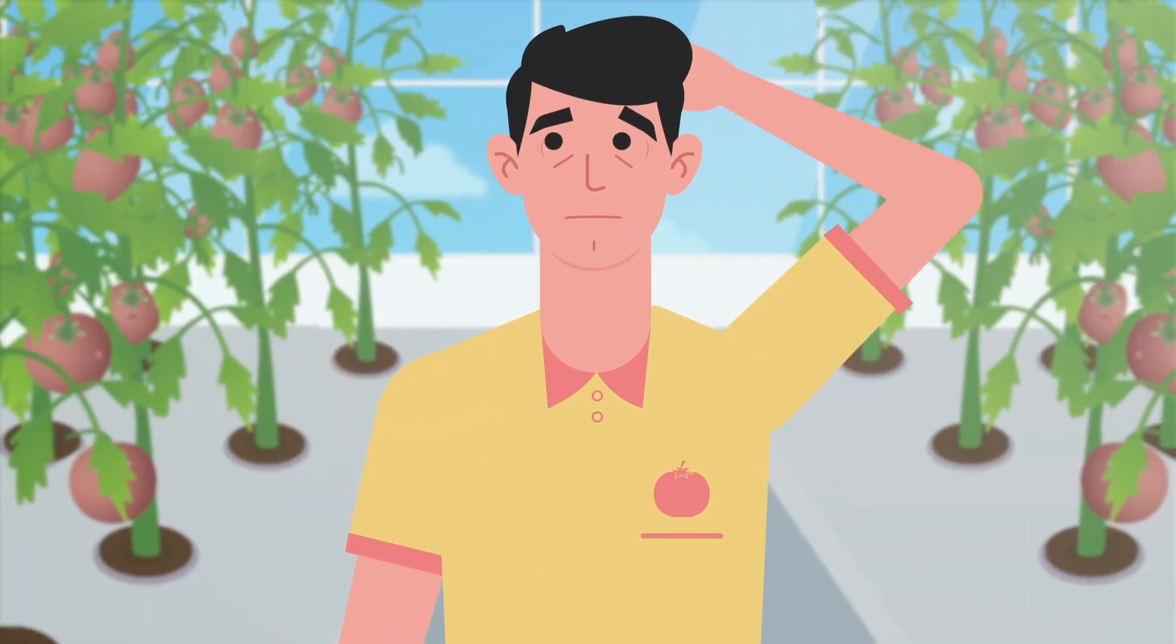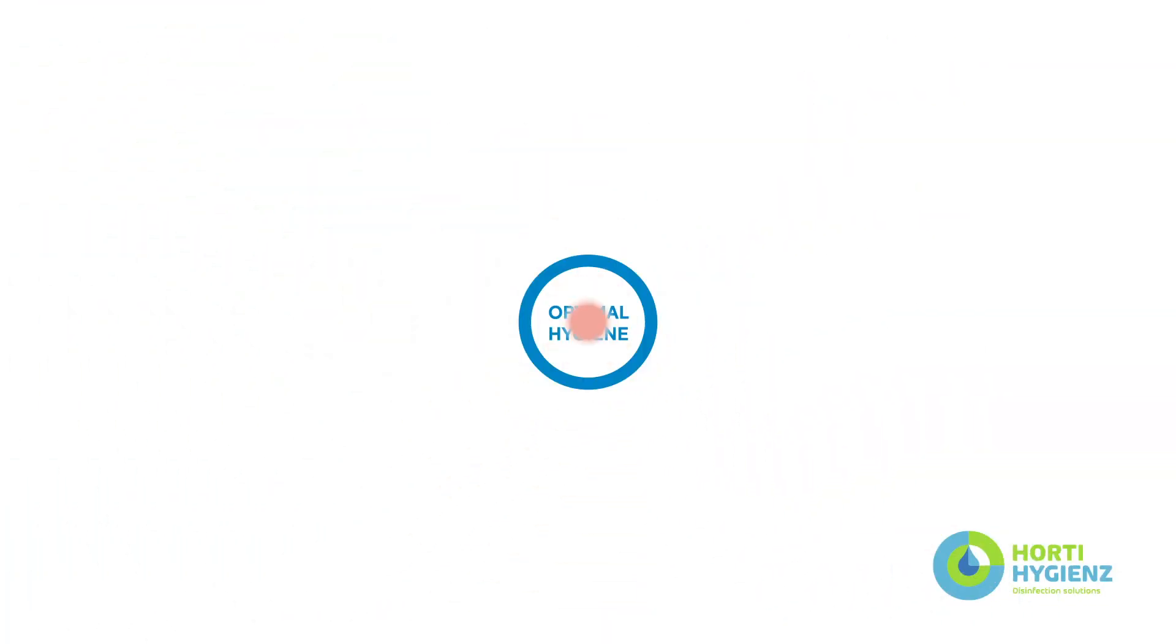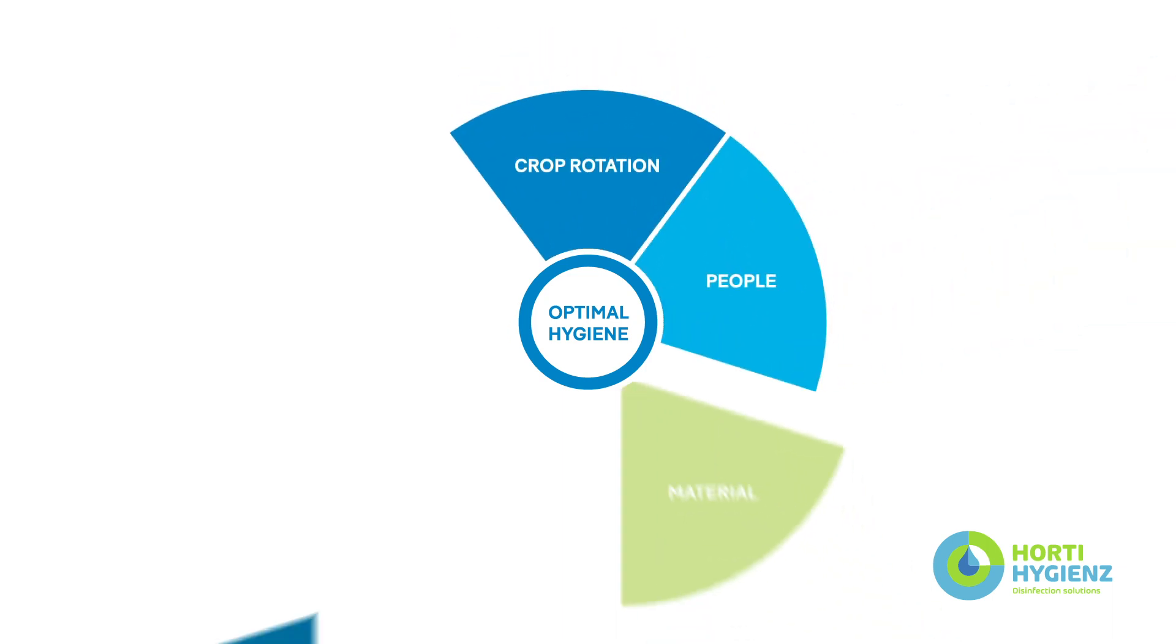As a result, the yield and profitability of the crop are threatened. Horti Hygienes offers a total solution based on five pillars.